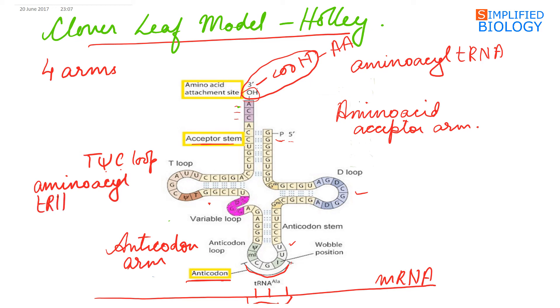The fourth is the D-loop or the dihydroxyuridine loop, as it has dihydroxyuridine in its unpaired loop. It is the site for the attachment of ribosome to the tRNA during protein synthesis. Hence, it is also referred as ribosome attachment arm. So these are the four arms of a tRNA molecule.